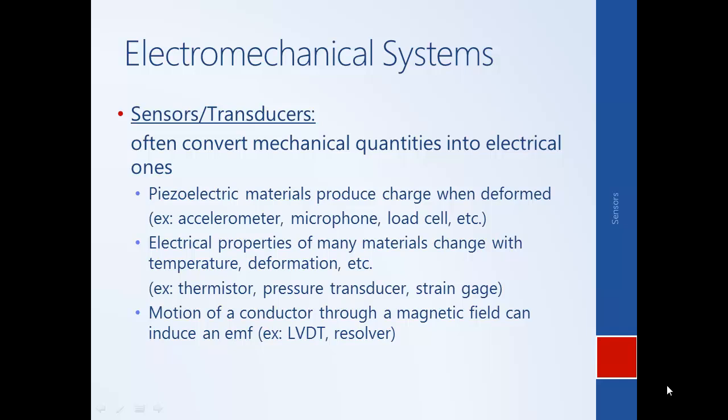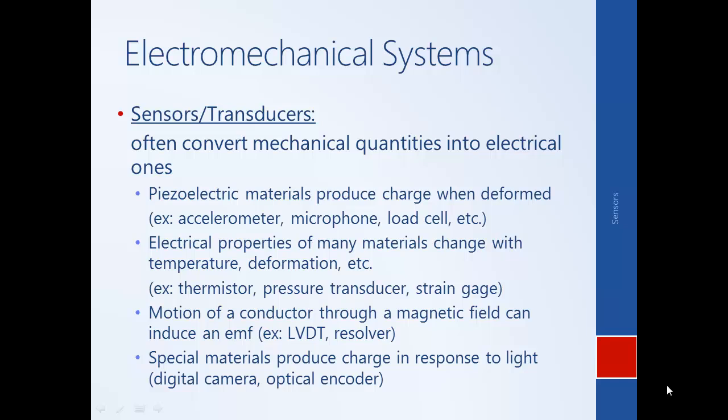Other sensors rely on electromagnetic induction — that a changing electric field generates a magnetic field and vice versa. The presence of an electric field causes an EMF, a voltage that generates current, which is the basic principle sensors use. Examples include LVDTs — linear variable differential transformers — and resolvers. A final class relies on special materials that produce charge in response to light, including optical encoders and digital cameras consisting of arrays of CCD — charge-coupled device — elements. We'll now pick a few examples of particular importance to automotive and electric vehicle applications.